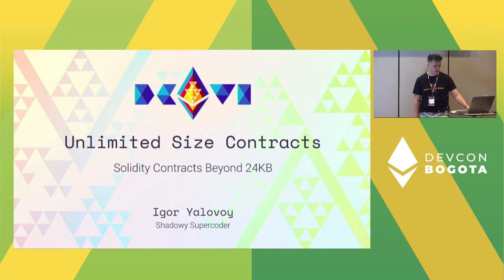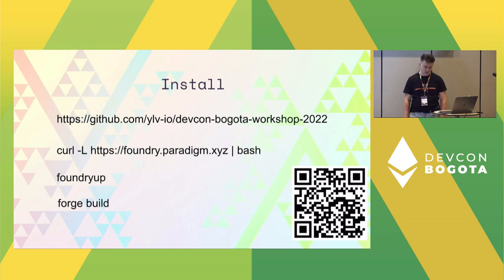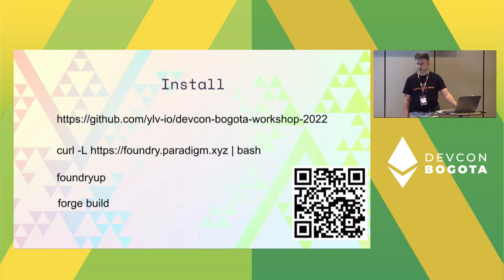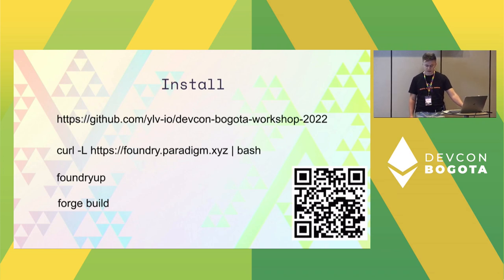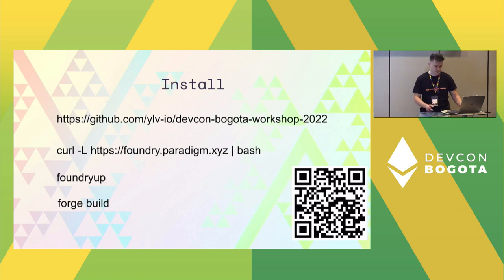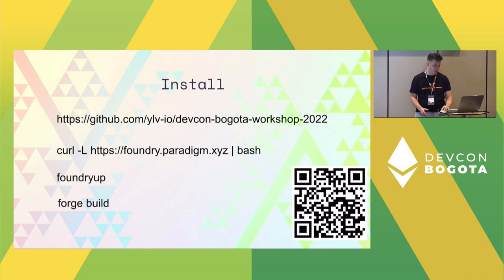Today I'm excited to present a workshop titled Unlimited Size Contracts. Before we jump in, you might want to download the GitHub repo for this workshop — either use the QR code or just google GitHub Yulav-IO workshop. We'll also need Foundry. If you don't have it, install it using the link in the slide and run two commands: foundry up and forge build. The repository will stay up, I'll post the slides tomorrow, and I'll be doing some live demos so you can watch and get the idea of what's going on.